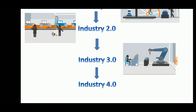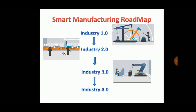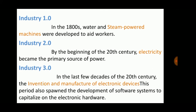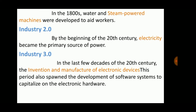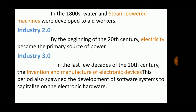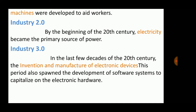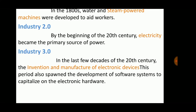Industry 1.0 started in the 1800s, using water and steam-powered machines. Industry 2.0 involved electricity, invented in the 20th century. Industry 3.0 evolved in the last few decades of the 20th century, involving hydraulics, pneumatics, and electronic devices.